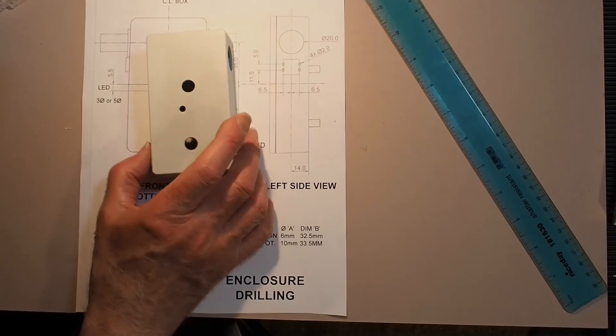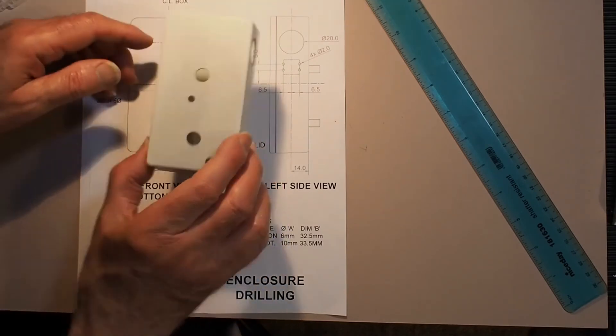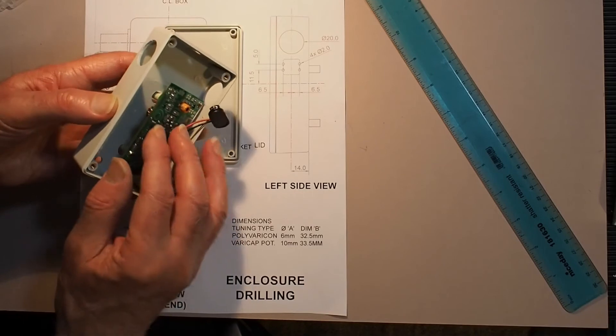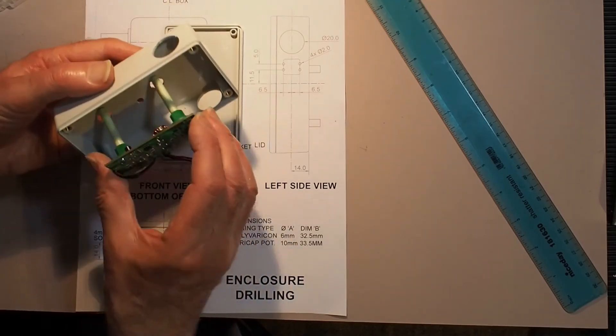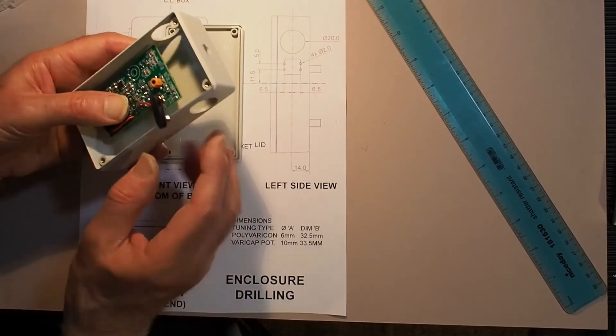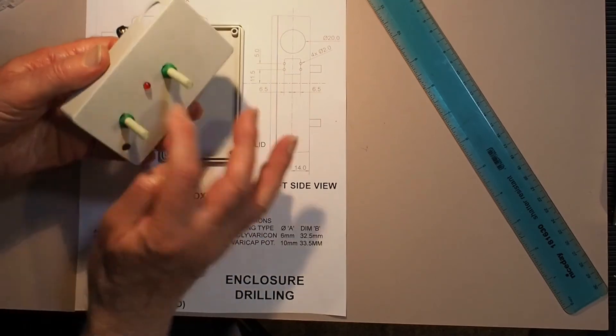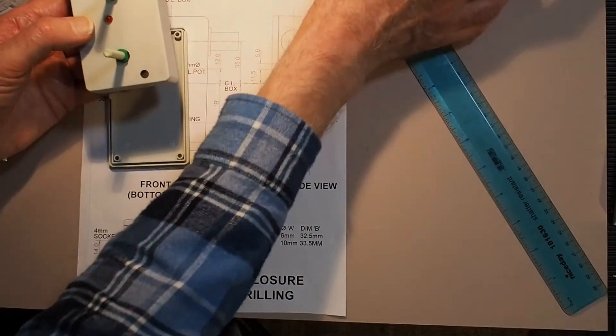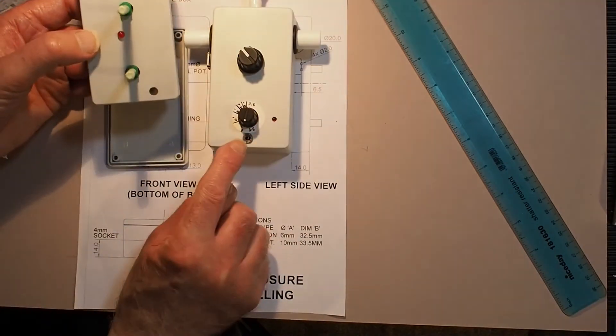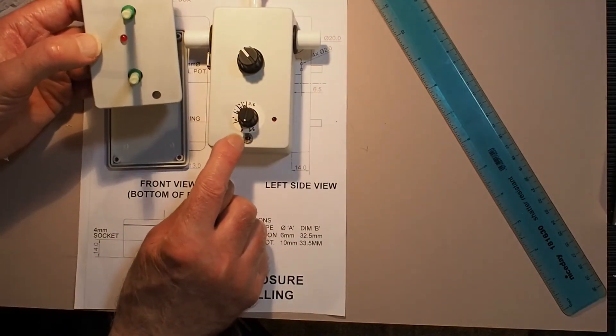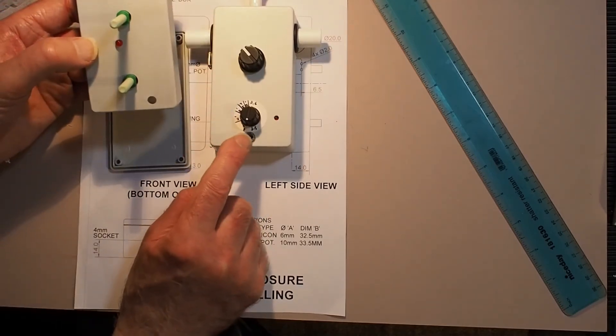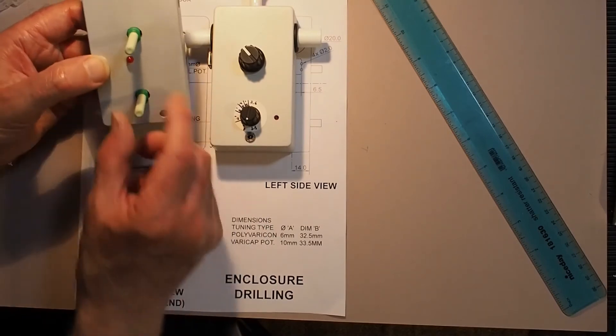That's the box completed. The printed circuit board just fixes through the control knobs, and the holes should align for the LED. One thing you might have noticed on my previous example - I had the headphone socket on the center line of the box, but it's much better if it's offset slightly away from the tuning knob.